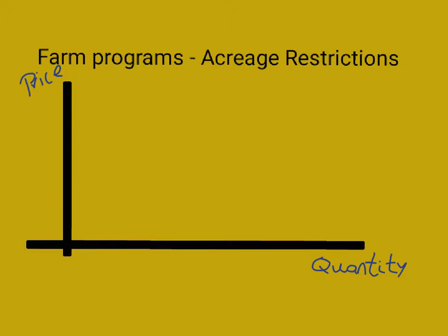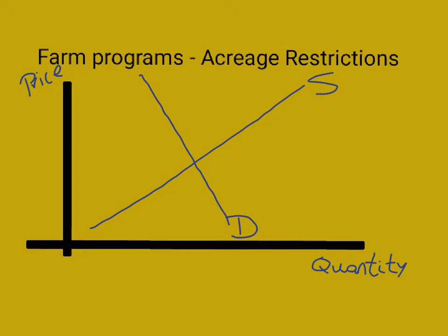So how does that work in practice? Let's say that the demand curve for the product that they're selling — wheat or corn or whatever — looks like that. And let's say the supply curve looks like that. Let's call it S1. When farmers are encouraged to produce less, the supply is going to be less, so the supply is going to shift to the left.